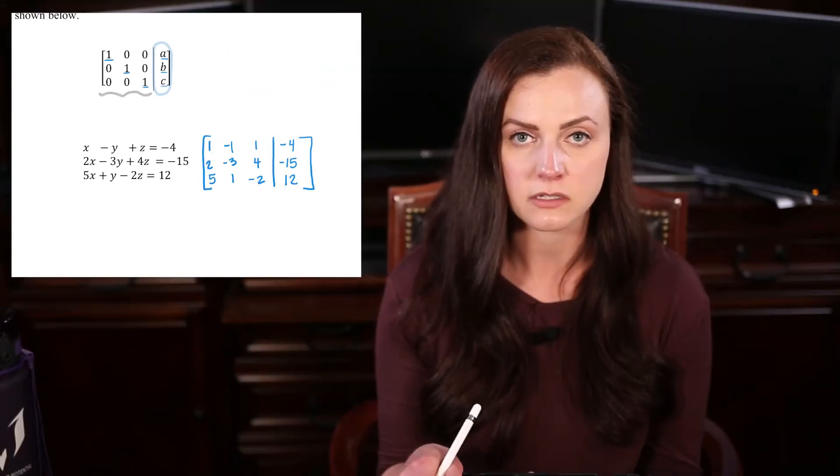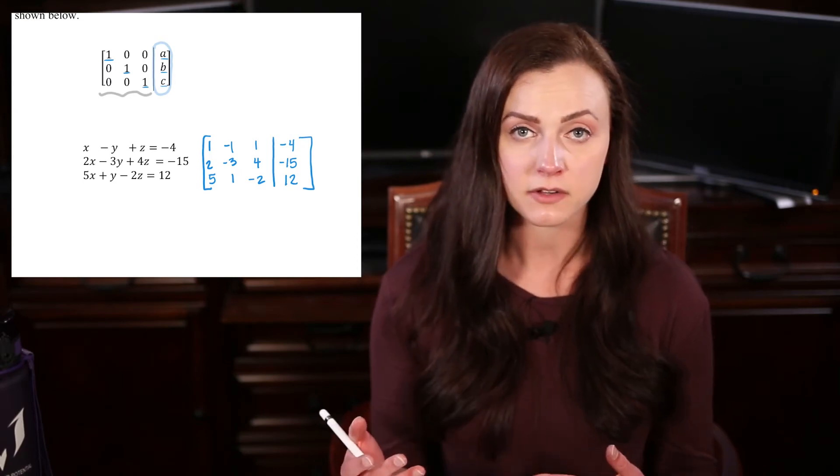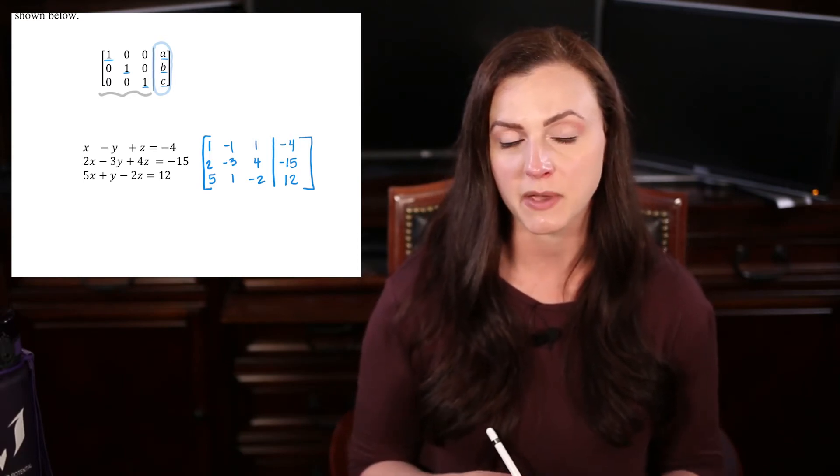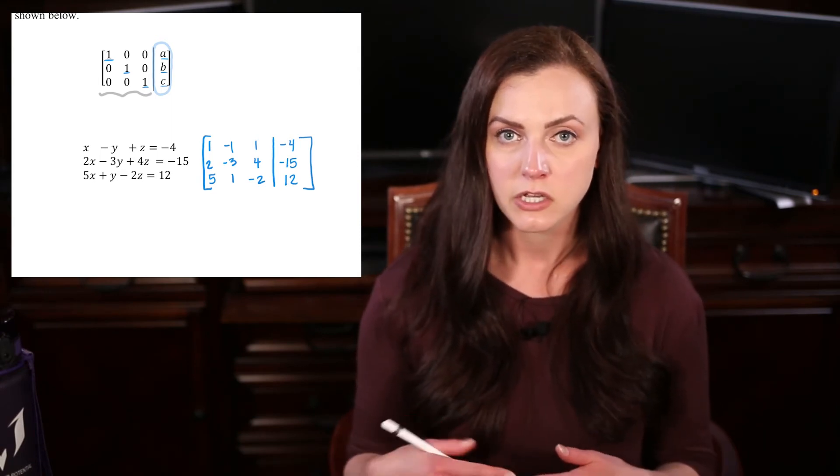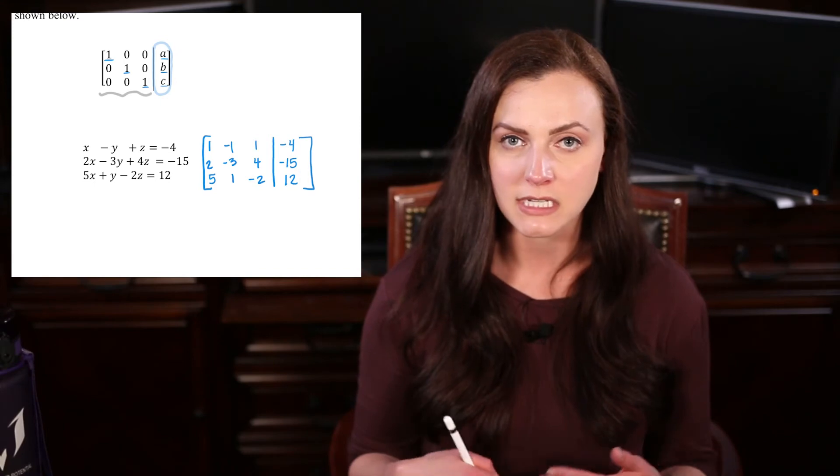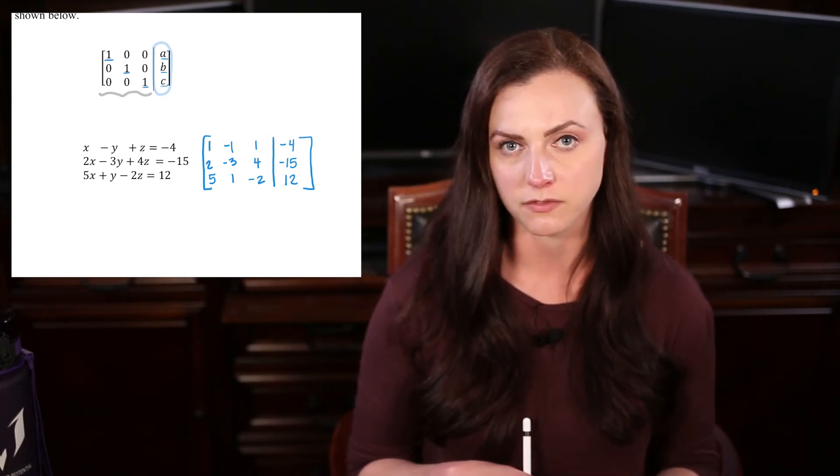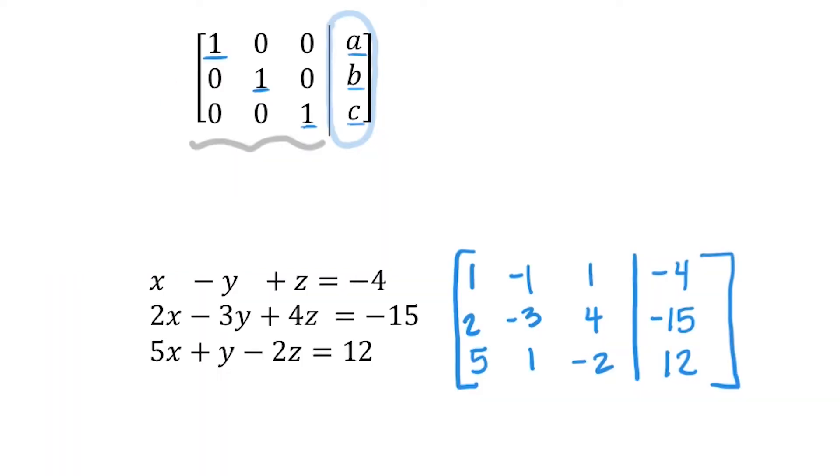So with row operations we can add rows together, we can subtract rows, we can multiply or divide by a constant, we can interchange rows. So you'll do a combination of those things as you're trying to get this in reduced row echelon form. I usually start with making sure that we have a 1 in the top left-hand corner. And since we do, that's great, we'll move down to these two numbers right here. Now there's kind of an order in which you need to get these values up here, because if you do them out of order, you can undo some of the work.